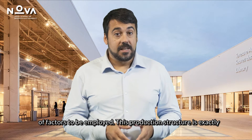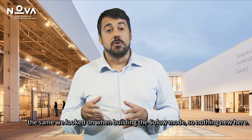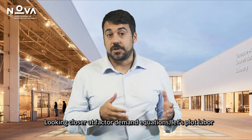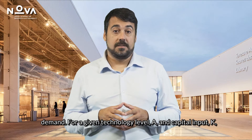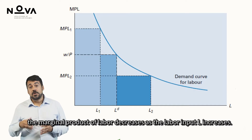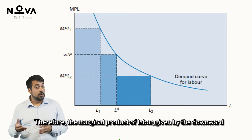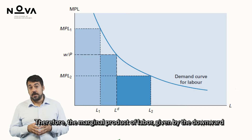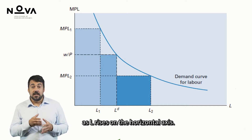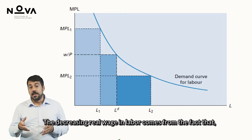This production structure is exactly the same as in the Solow model, so nothing new here. Looking more closely at factor demand equations, let's plot labor demand. For a given technology level A and capital input K, the marginal product of labor decreases as the labor input L increases. Therefore, the marginal product of labor, given by the downward sloping curve, declines on the vertical axis as L rises on the horizontal axis.